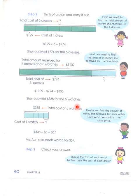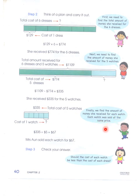We wanted to know the cost of the watches. By subtracting the cost of the dresses from the total, we get the total cost of five watches, which is $335. So the cost of one watch is 335 divided by 5, which equals $67. Finally, each watch was sold at the same price — $67.